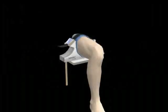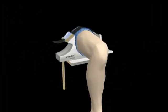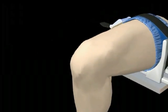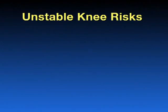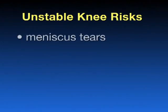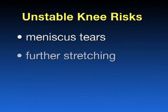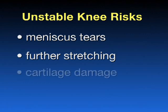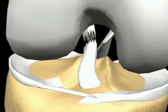Without a functioning ACL, most people will have recurrent giving away events with attempts to return to sports or physically demanding activities. The unstable knee is at risk for meniscus tears, further stretching out of the structures, cartilage damage, and arthritis. Some develop giving away of the knee with ordinary daily activities. The torn ligament does not heal itself.